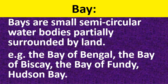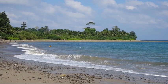Now let us see what is a bay. Bays are small semi-circular water bodies. Examples include the Bay of Bengal, the Bay of Biscay, the Bay of Fundy, and Hudson Bay. Bays are semi-circular water bodies.